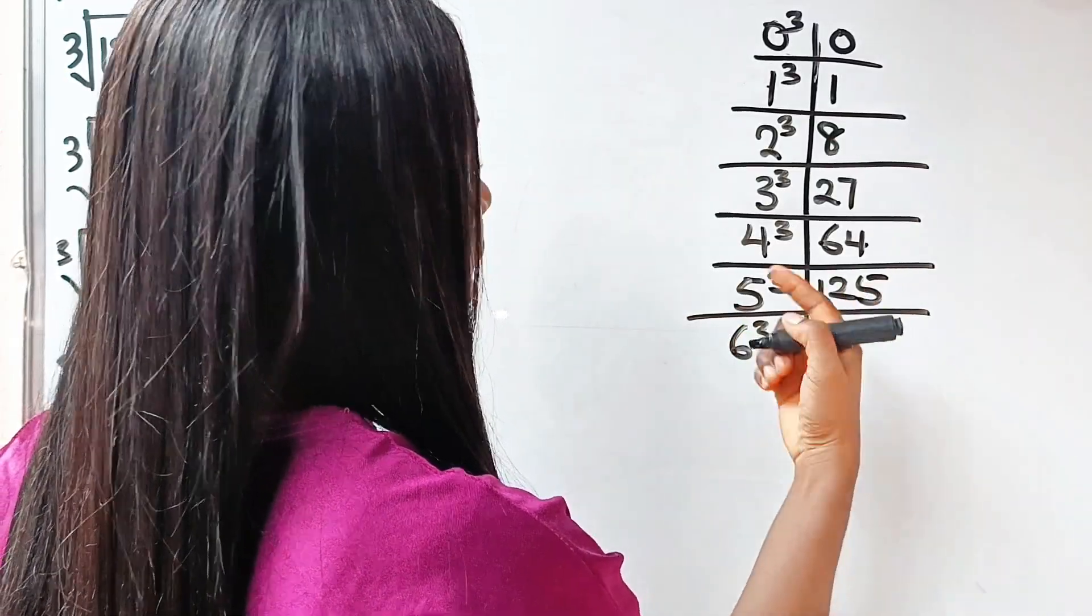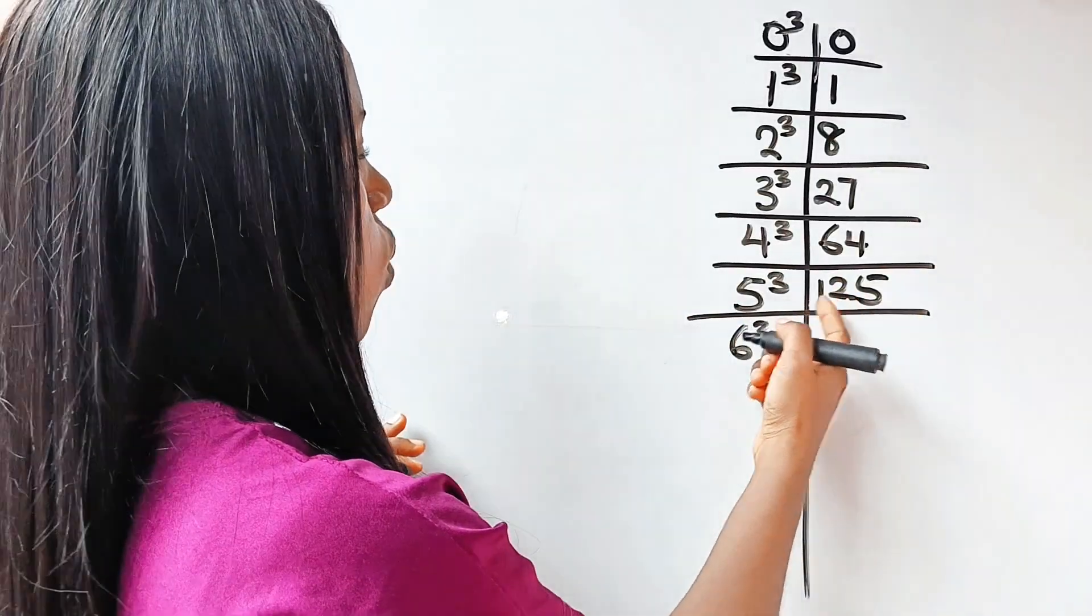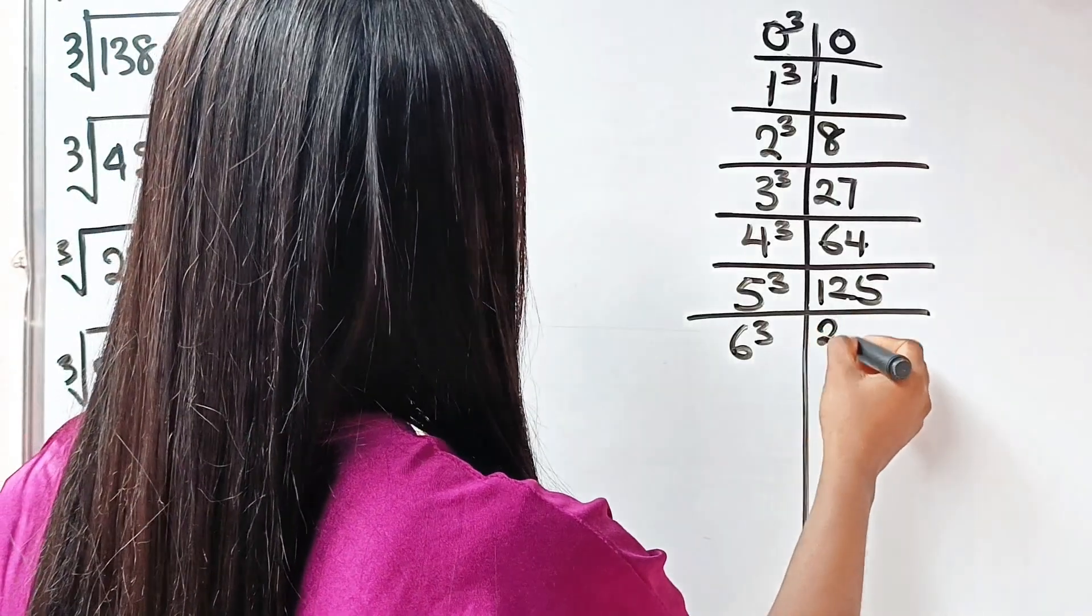6 cubed is... See how I interchange it? 125, but this time it will be 6, 216.